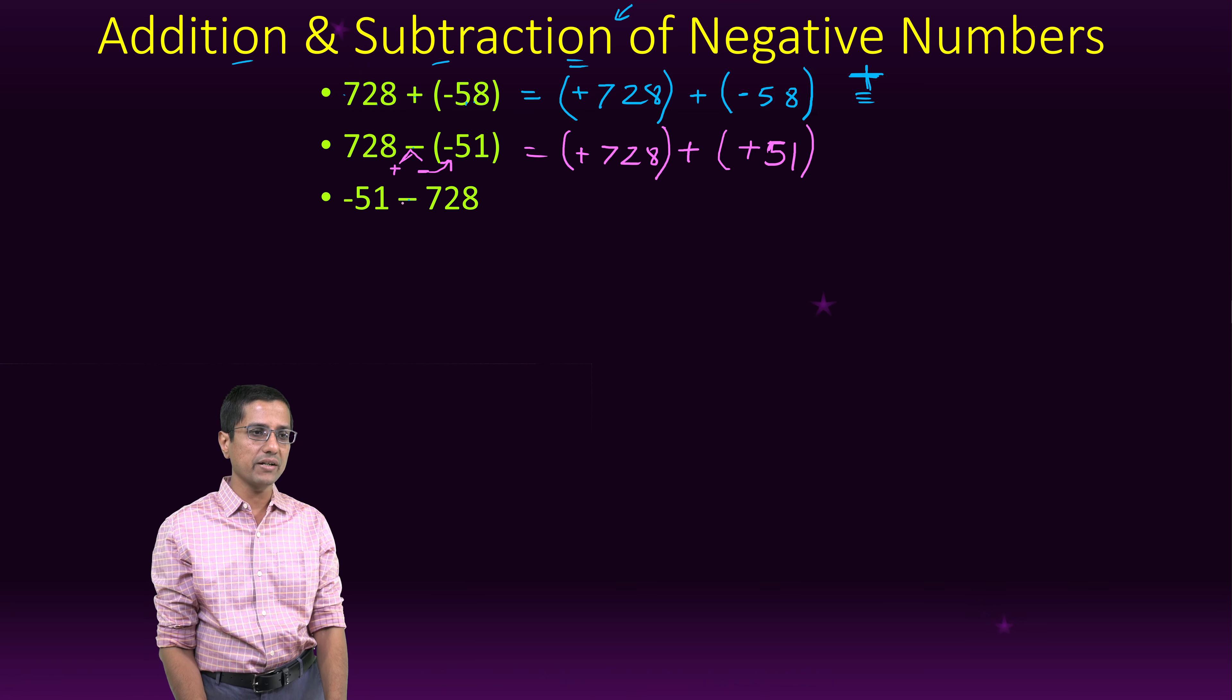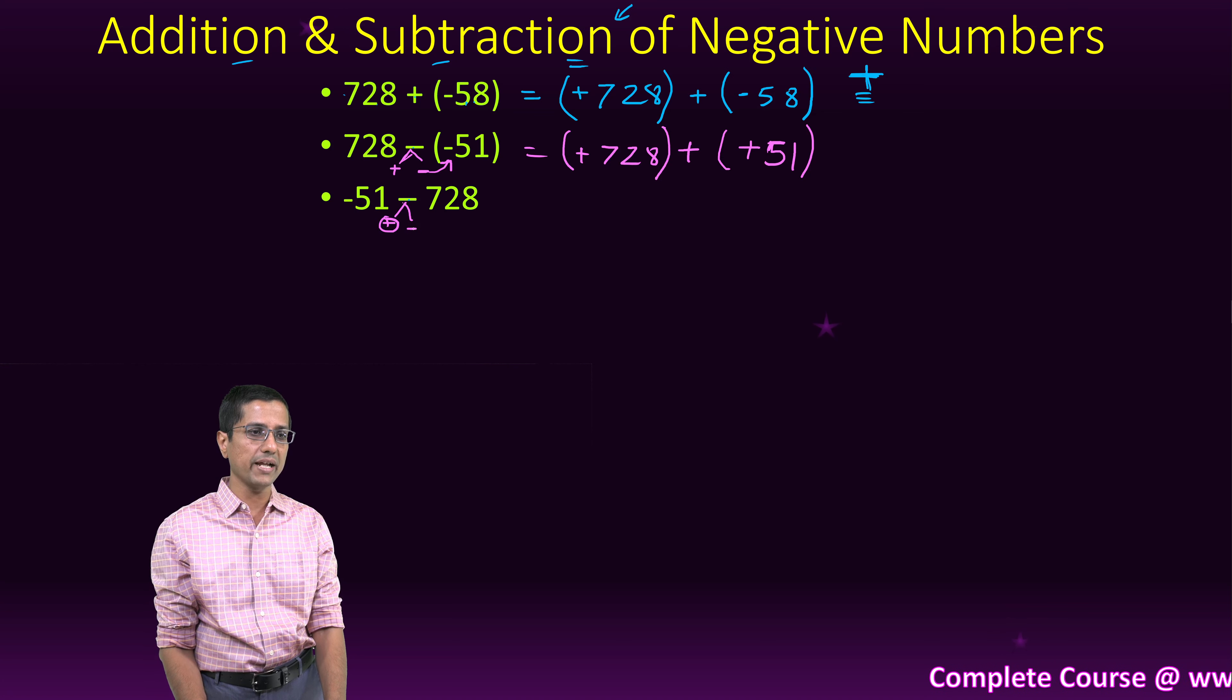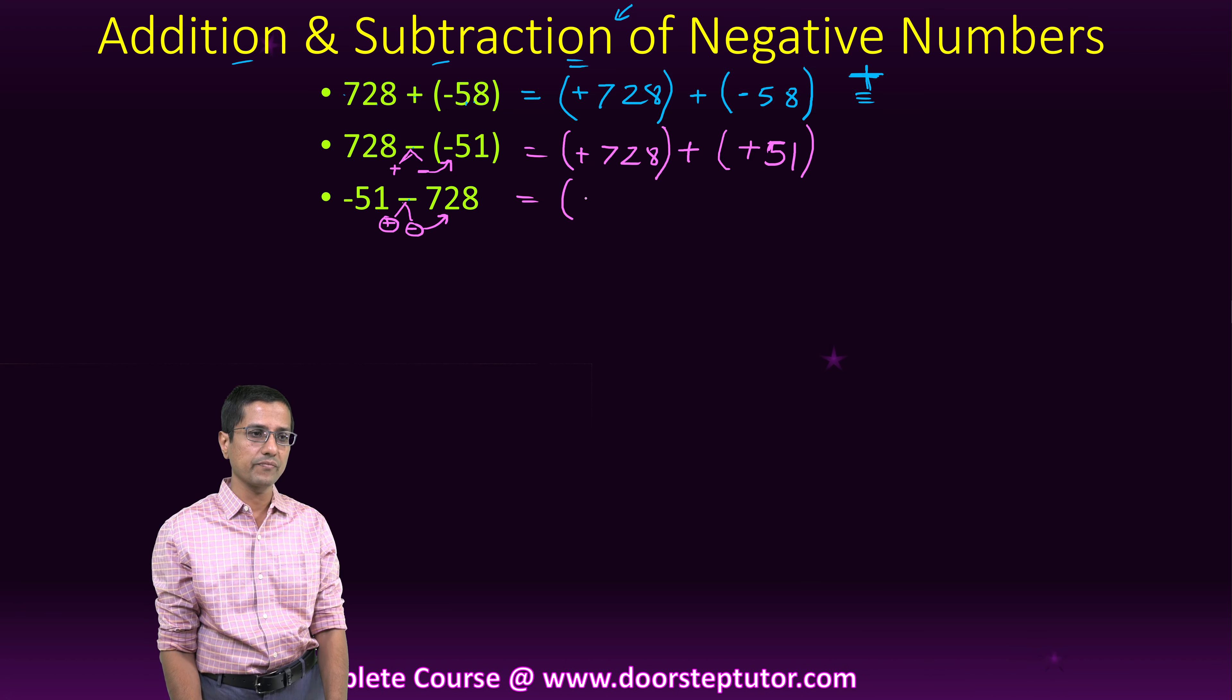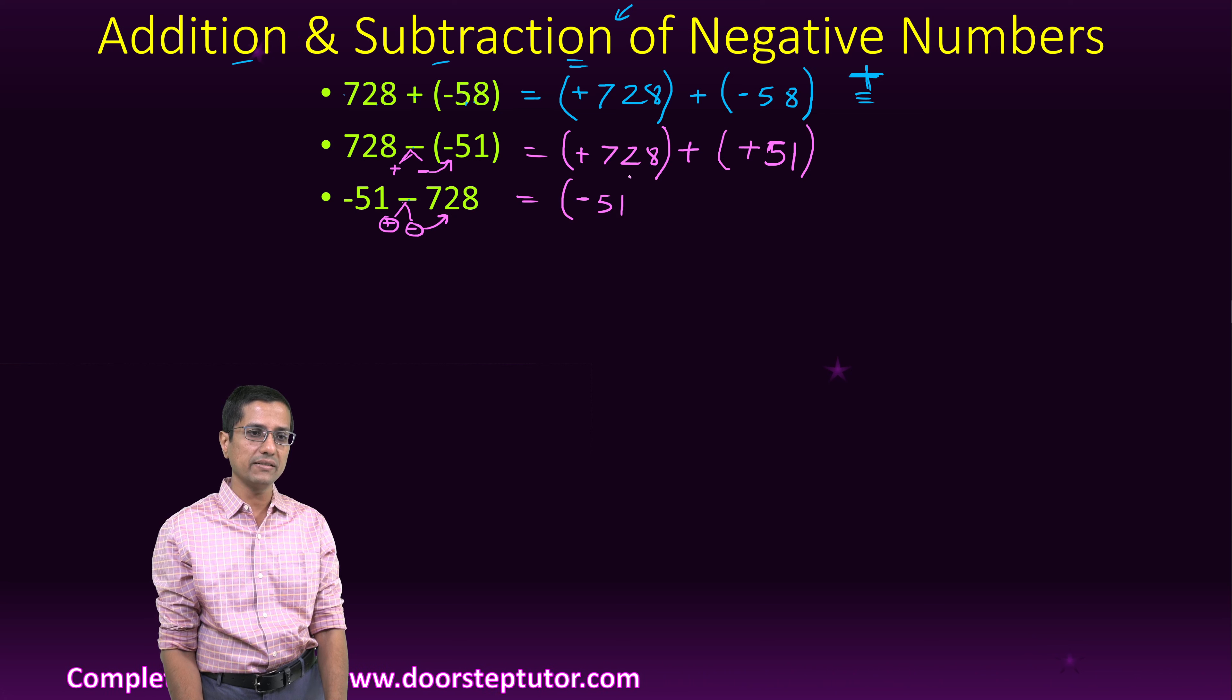For this operation, again, we will do the same thing. This is a plus and a minus. And this minus will move with 728. So this becomes minus 51. That is the first operand, plus.